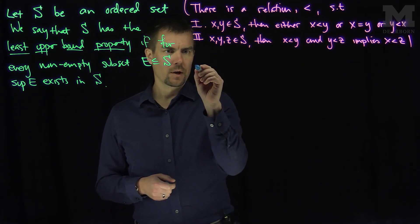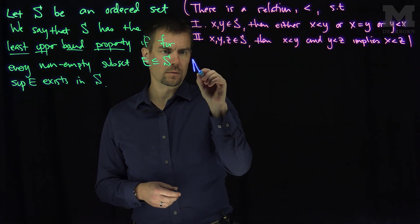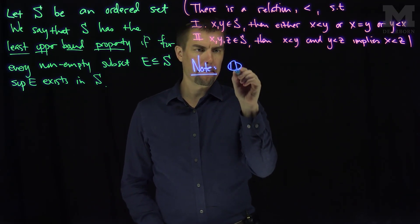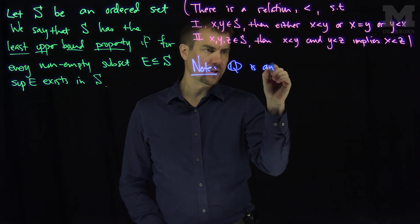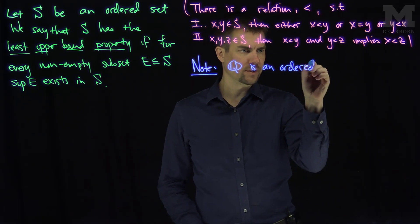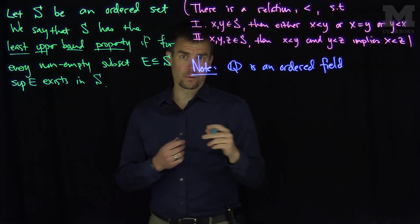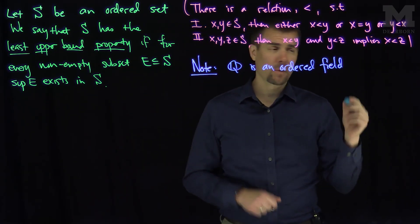So here we go. The remark, or note, Q is an ordered set. It's actually more than an ordered set. It's an ordered field. It's an ordered field that does not have the least upper bound property.